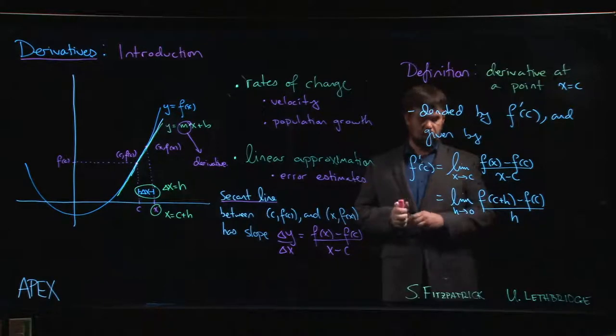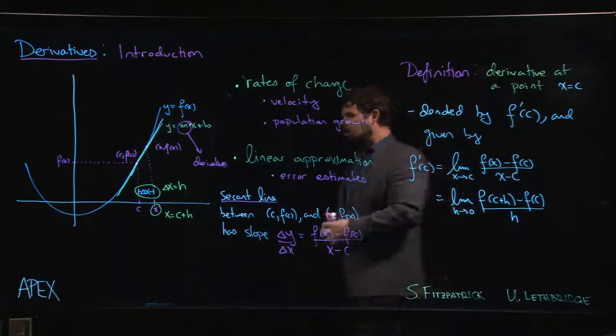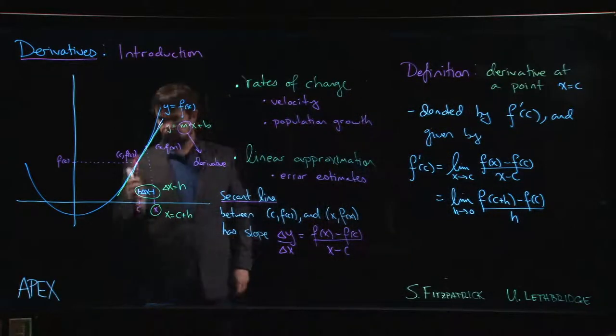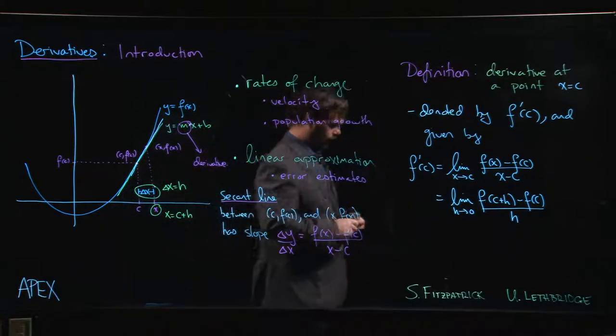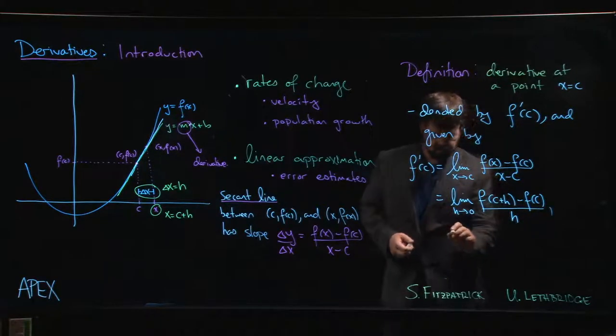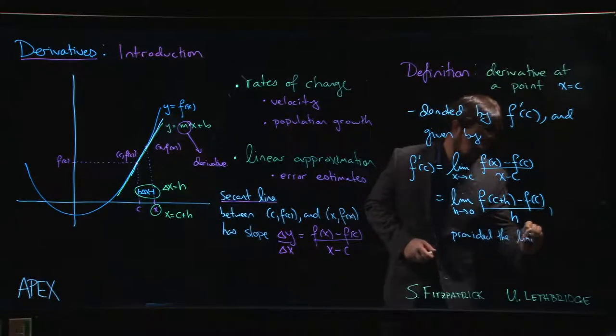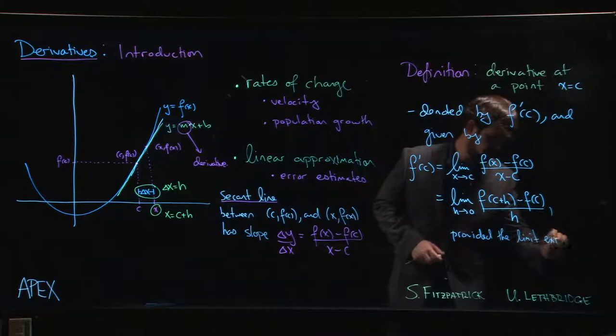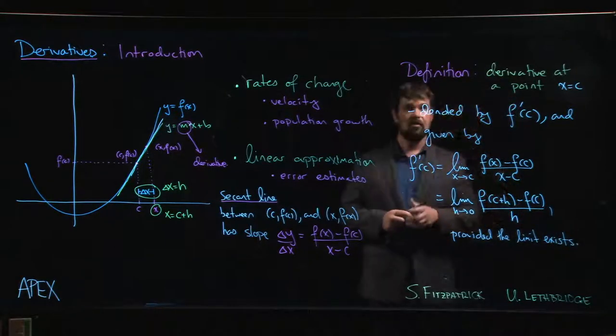And so this limit, what is this quantity that you're computing? Well, it is exactly the slope of this tangent line. And there's the usual kind of catch here: there will be situations in which this limit fails to exist.